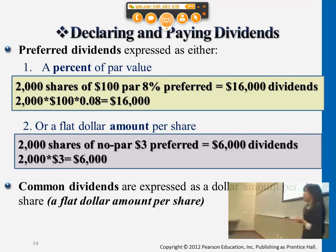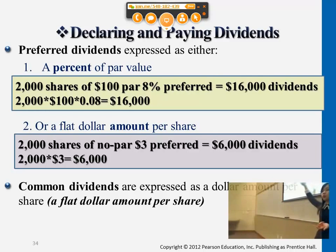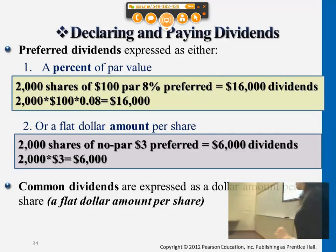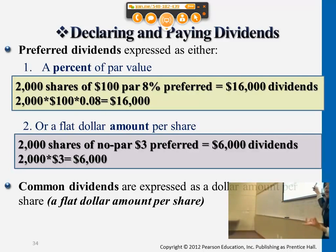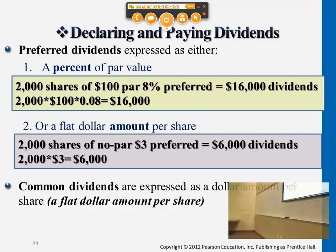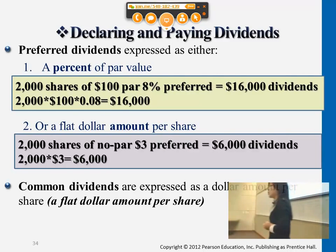As for common shareholders, it's usually just the flat dollar amount. Preferred shareholders usually have a dividend rate, while common shareholders usually just get a flat dollar amount — could be $1 for each share a common shareholder holds. For most problems, you'll see that preferred shareholders receive more than common shareholders.